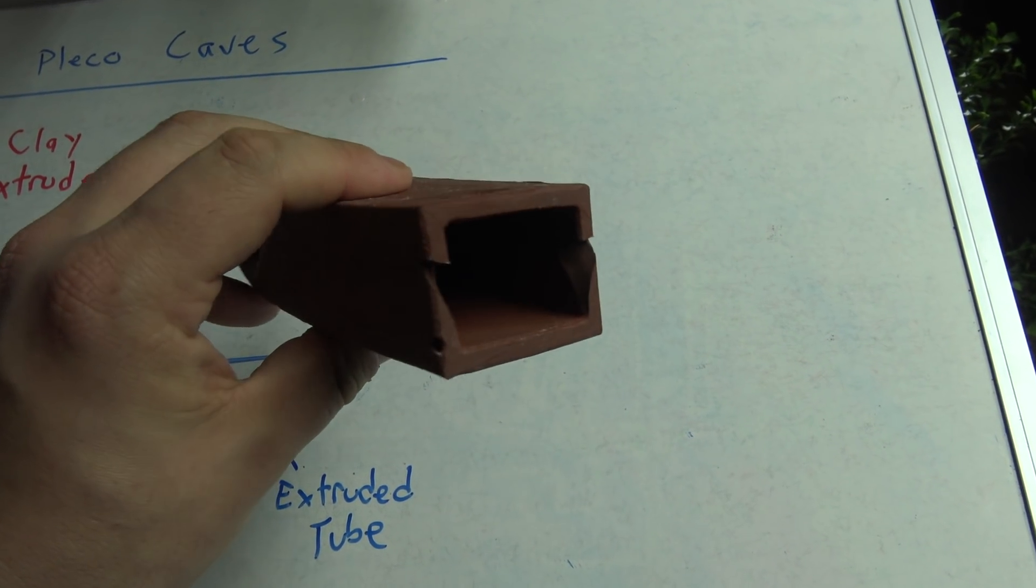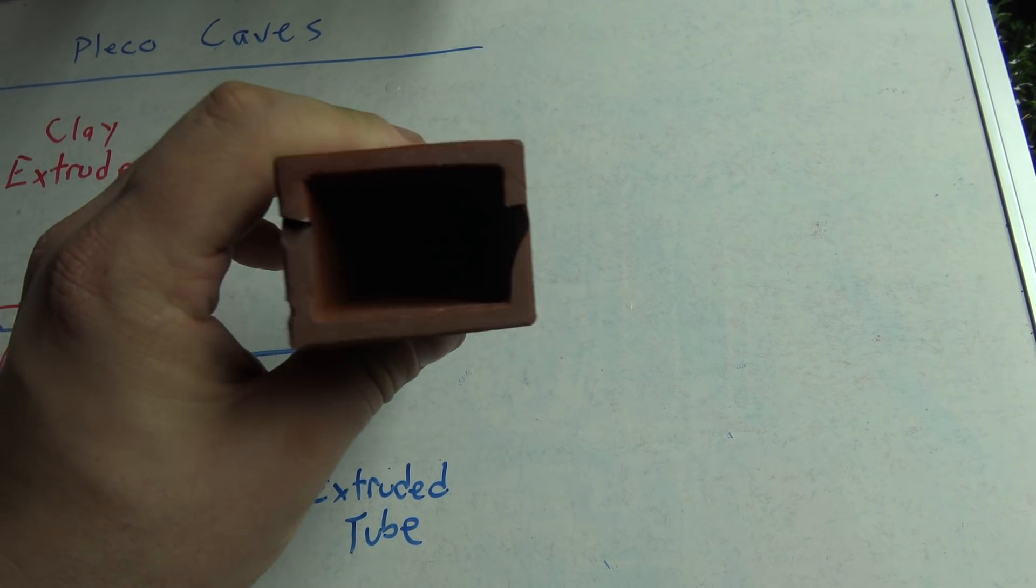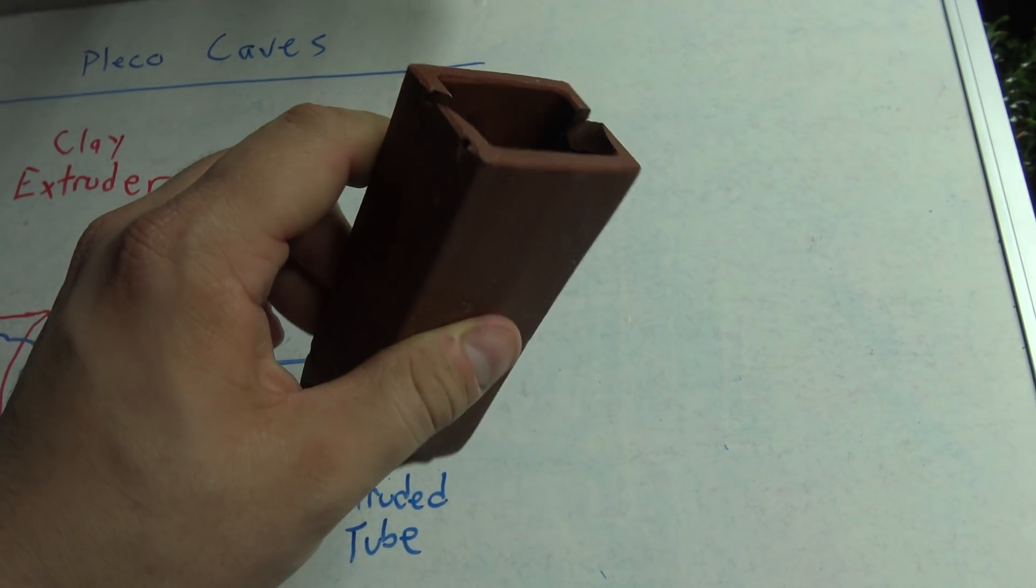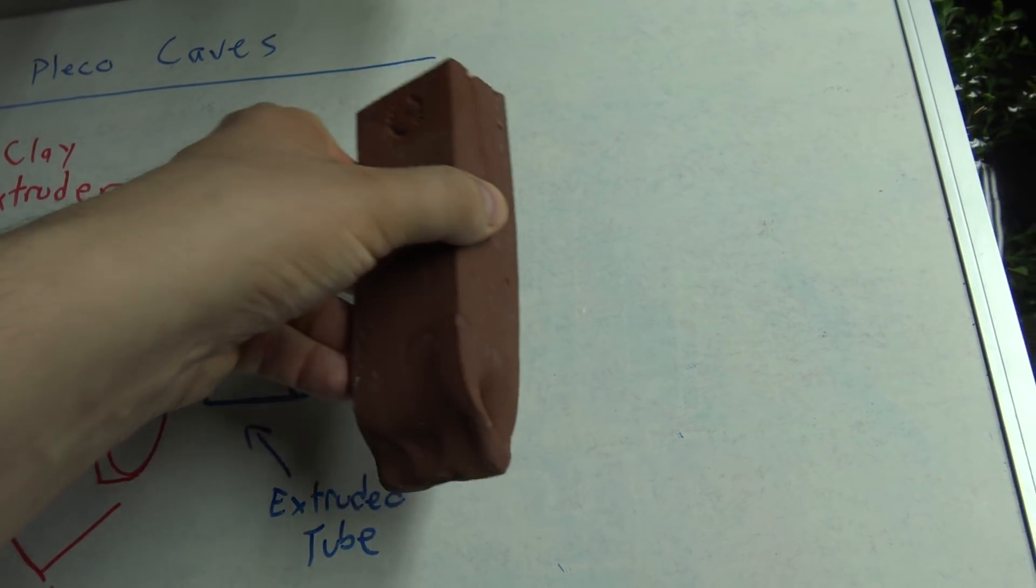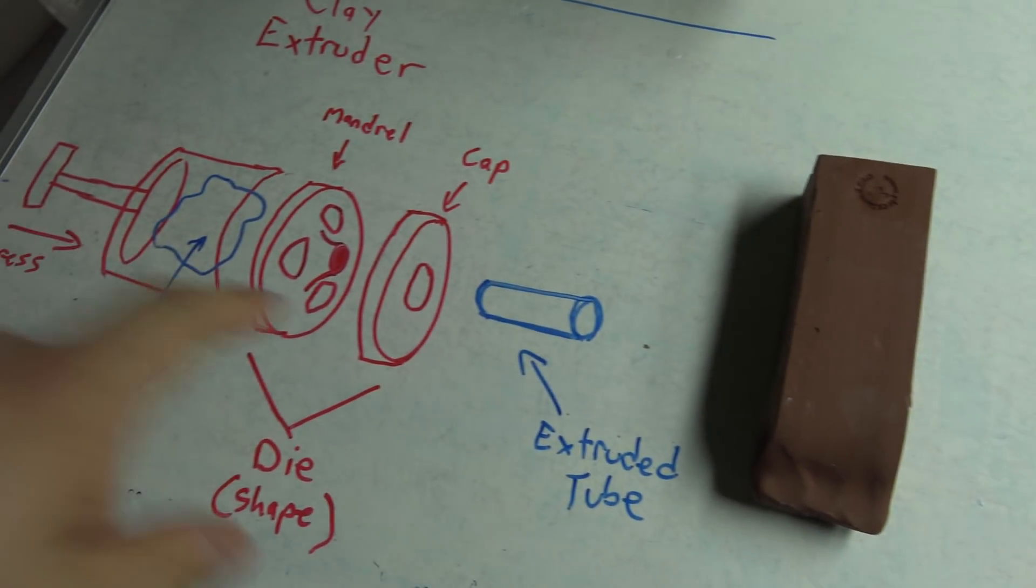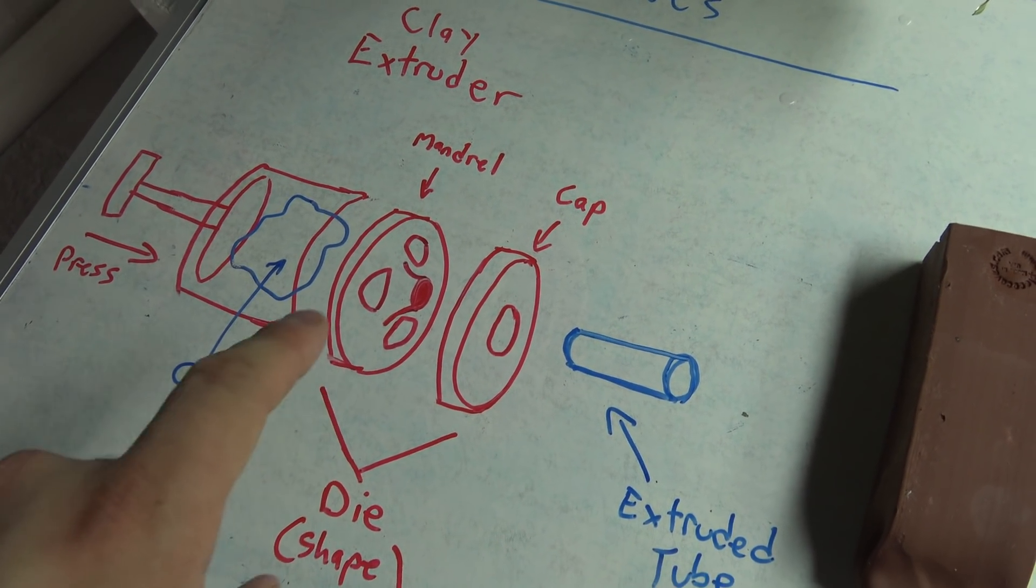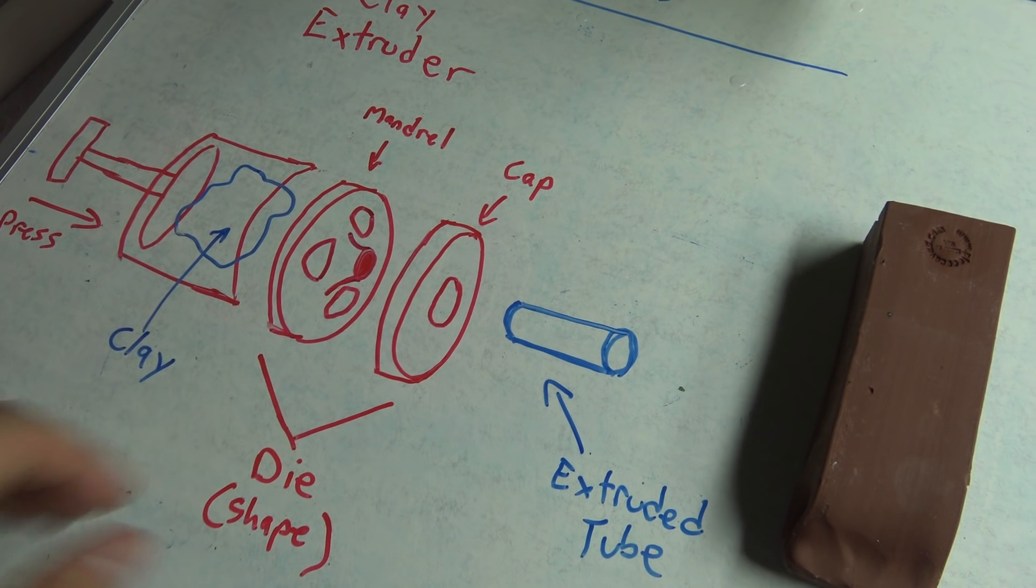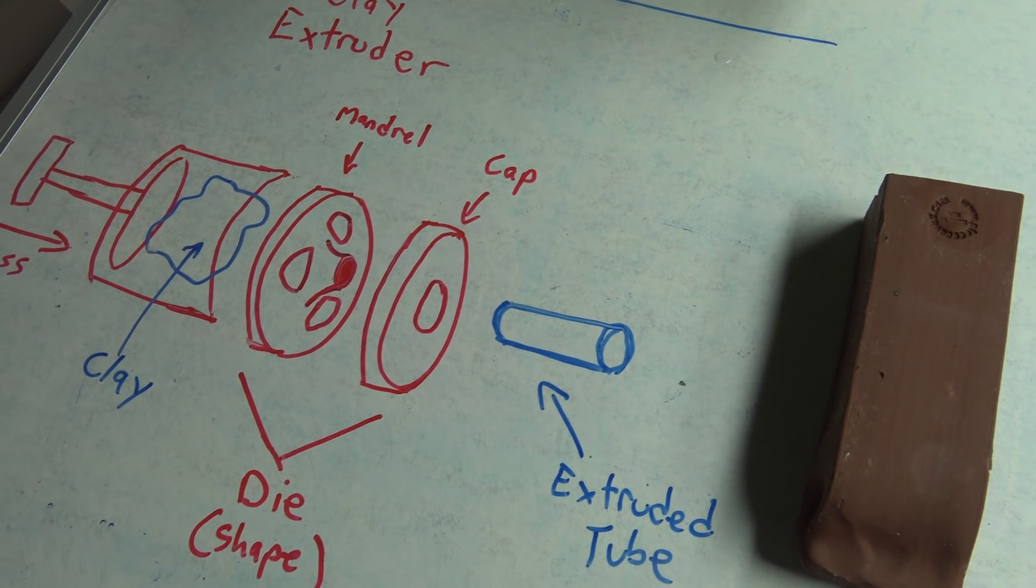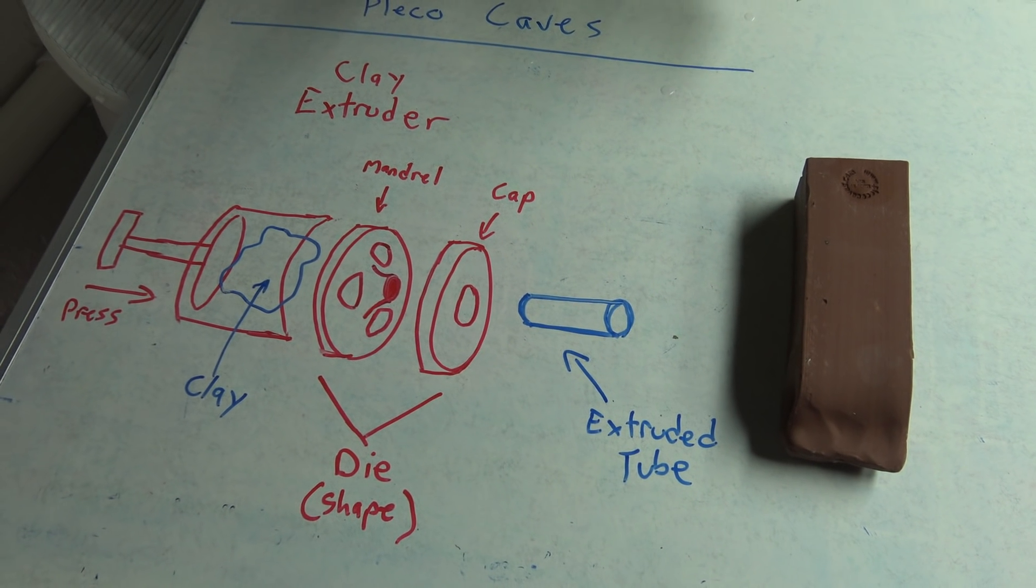Obviously, they come in a lot of different shapes and sizes. This one is a rectangle cave, but they come in round shapes, they come in half moon, like D shapes, come in all kinds of different shapes. And essentially, what that comes down to is just a different shape extruder die. The die is what's going to give you your shape. So you just swap those out and all of a sudden, you've got a different shape that's being extruded.